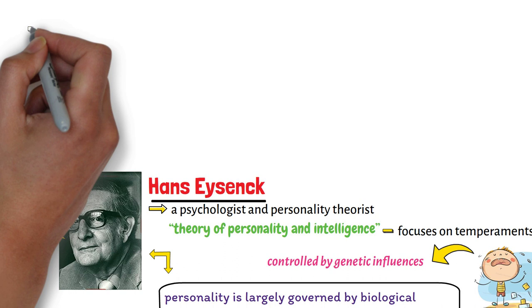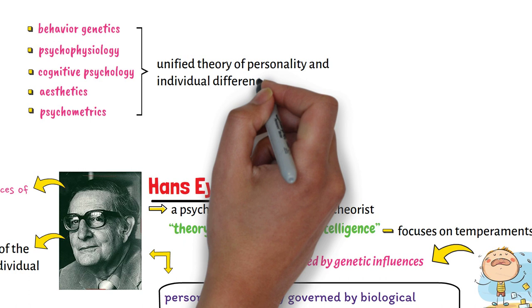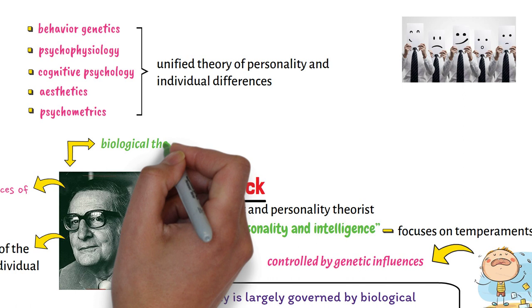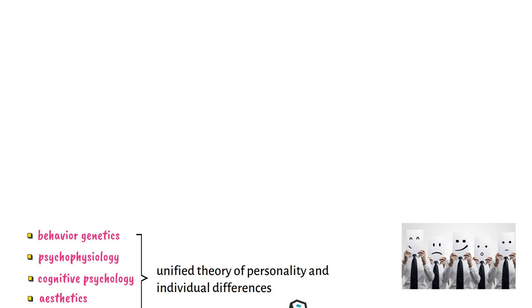Eysenck strove to integrate behavior genetics, psychophysiology, cognitive psychology, aesthetics, and psychometrics into a unified theory of personality and individual differences. Although best known for his biological theory of extroversion, his impact upon the field was much more than that. This paper will only briefly sketch the key concepts of Eysenck's theory of personality.